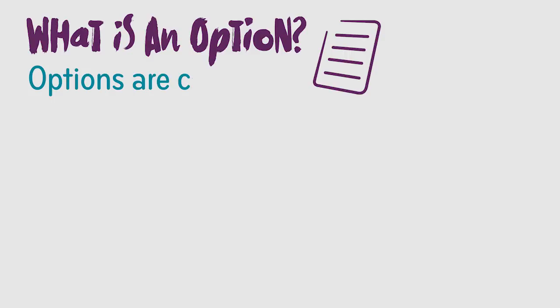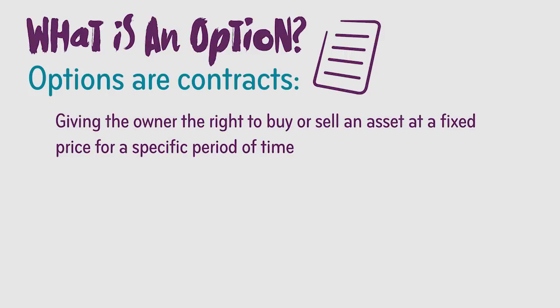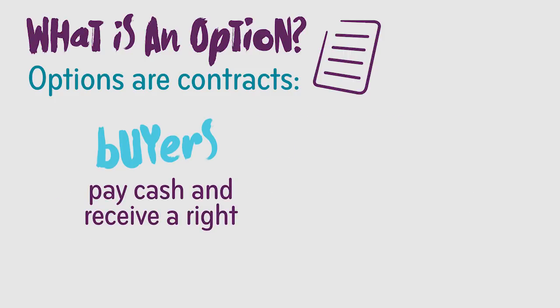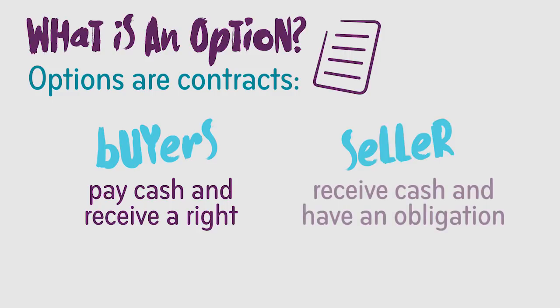An option in general is a contract and it gives the owner the right to buy or sell an asset at a fixed price for a specific period of time. It then obligates the seller of the contract to take the opposite side if and when the right embedded in the option contract is exercised by the owner. Bottom line is the buyers of contracts pay cash and for that cash they get a right. The seller of the contract receives the cash and for receiving that cash they take on an obligation.